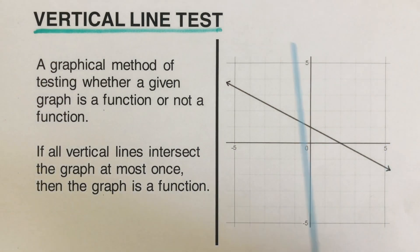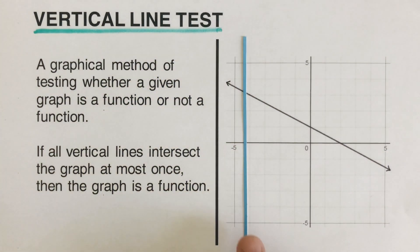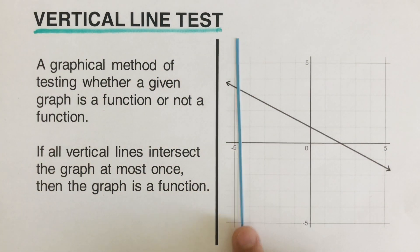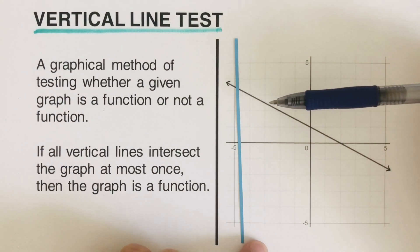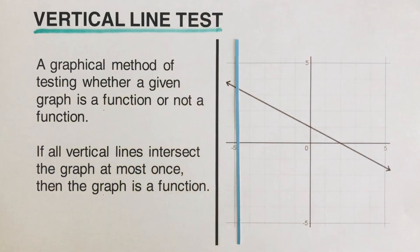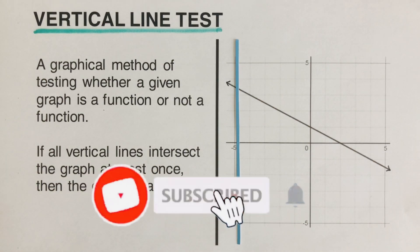So what does it mean? If I pass a vertical line — this is the vertical line in blue — through this graph, and the graph touches this vertical line at one point only, then it is a function. Otherwise, if the graph touches two points, three points, or more than two points on this vertical blue line, then the graph is not a function. It has to touch only at one point.